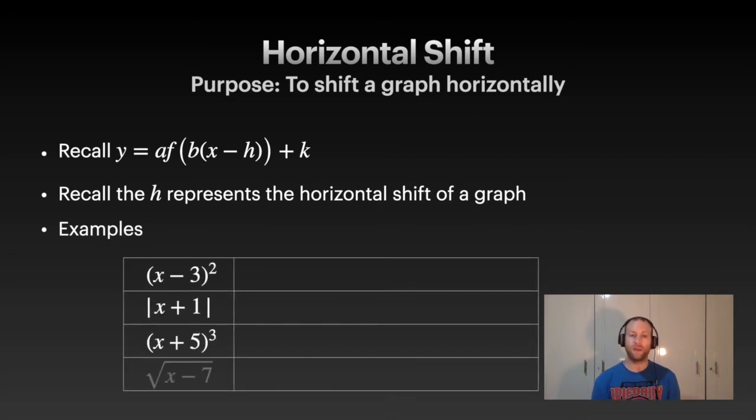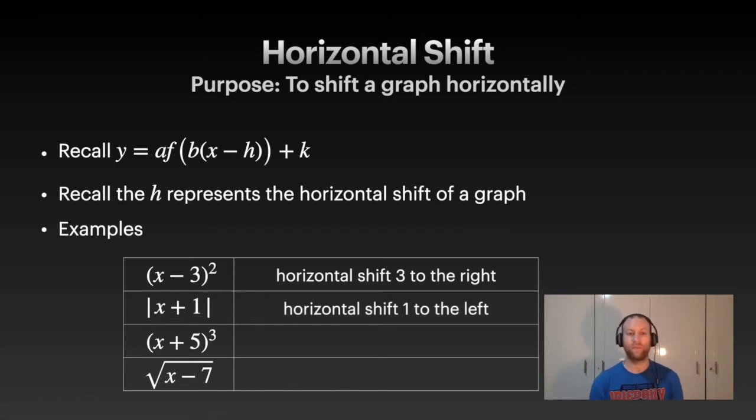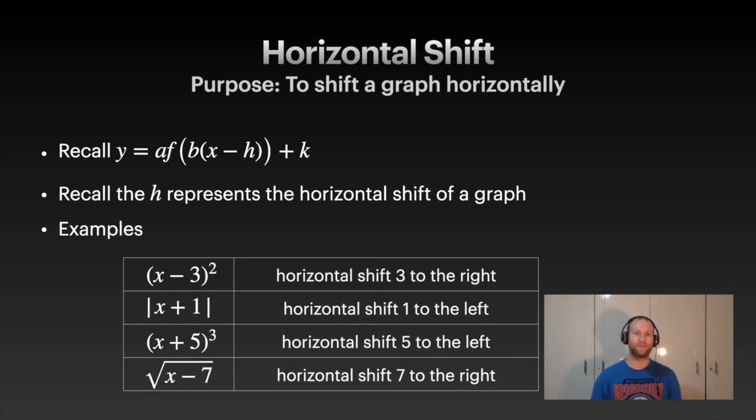Notice with this we've got a bunch of different functions. We've got a squared function, so quadratic, we've got absolute value, we've got a cubic and a square root. It doesn't matter which function we're dealing with, all that matters is the shift. So x minus 3, because of the minus 3, we're going to shift to the right 3. Think of it the opposite of that sign. We've got absolute value of x plus 1, shifting 1 to the left. X plus 5, we shift 5 to the left, and then x minus 7, we're going to shift 7 to the right. Whatever that x value is, or right beside that x value, you're going to shift the other direction. Normally negative would mean left, we're going to flip it, and it all has to do with that equation at the top where it says x minus h.